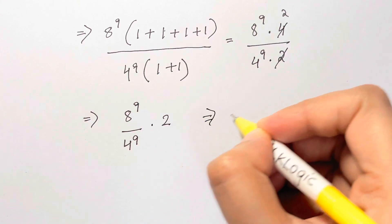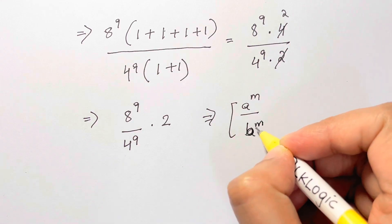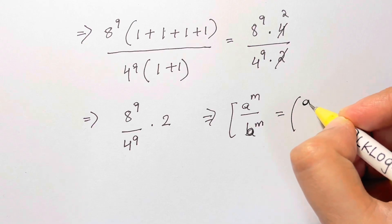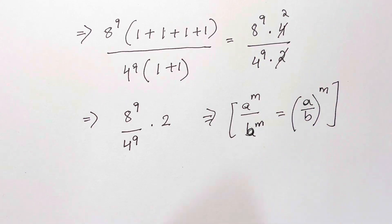Now this can be written as, you should know this, a to the power of m over b to the power of m. So what you can do is you can club the powers as a over b, whole to the power of m. So we're going to apply that.